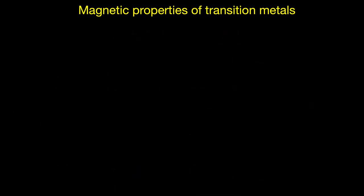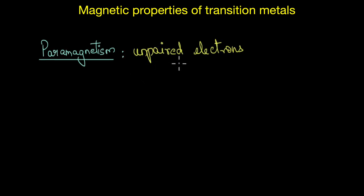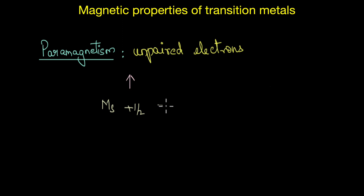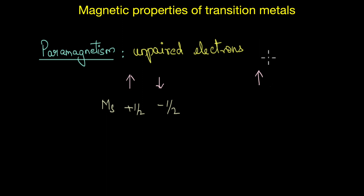Paramagnetism arises due to the presence of unpaired electrons. Every electron has an intrinsic magnetic dipole moment associated with it. The spin of a single electron, denoted by the quantum number ms, can be +½ or −½. When electrons get paired, the spin gets negated, meaning the magnetic field produced by a paired electron is much less than that produced by an unpaired electron.